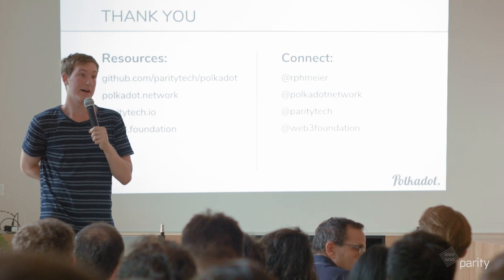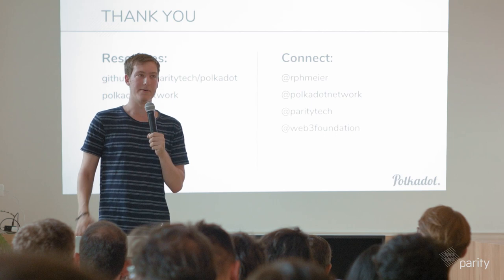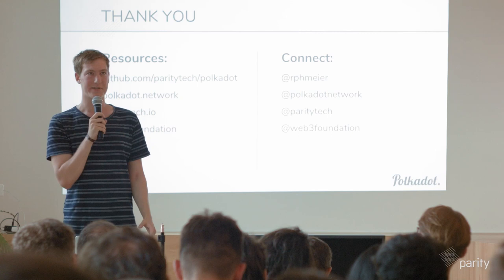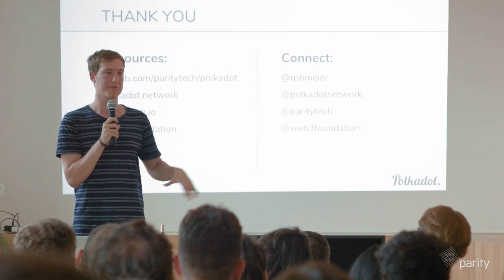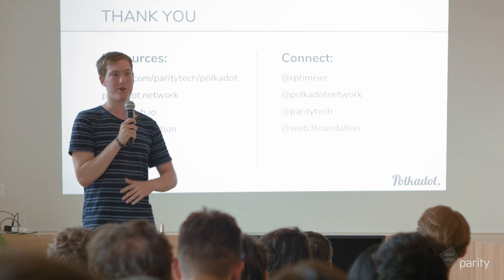Q&A: What randomness beacon do you use for shuffling validators? Right now we're using something from a paper called Collective Coin Flipping — basically iterated majority of bits in previous block hashes. We're also looking into Randao. BLS threshold signatures are their own thing with non-attributable misbehavior. We haven't decided completely yet.